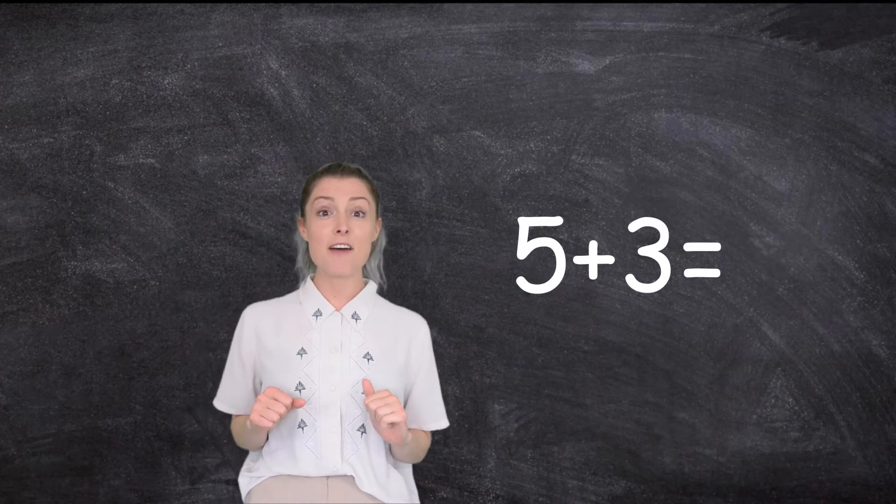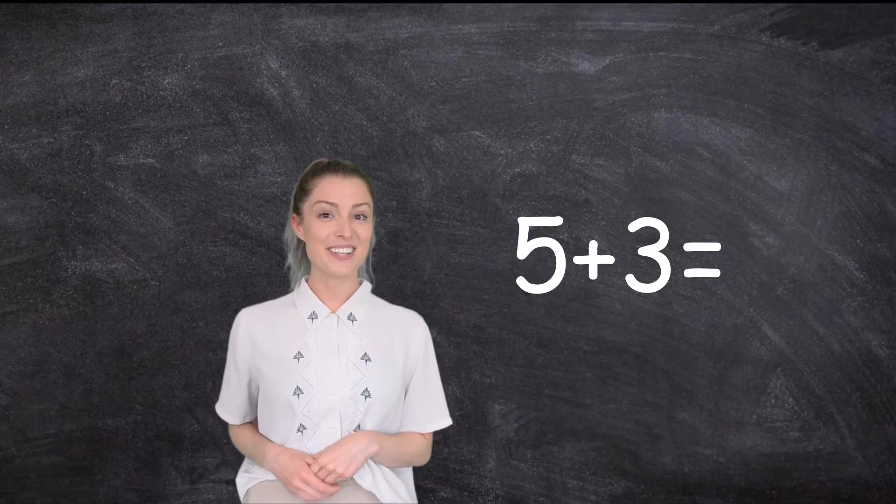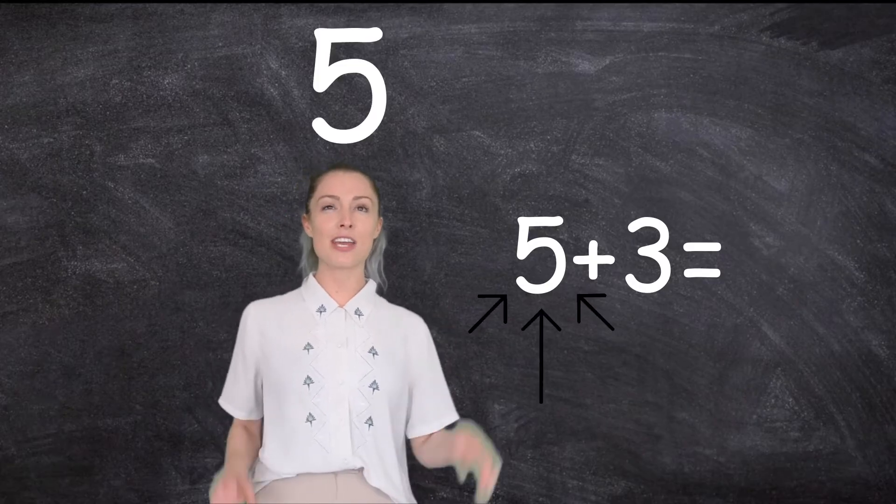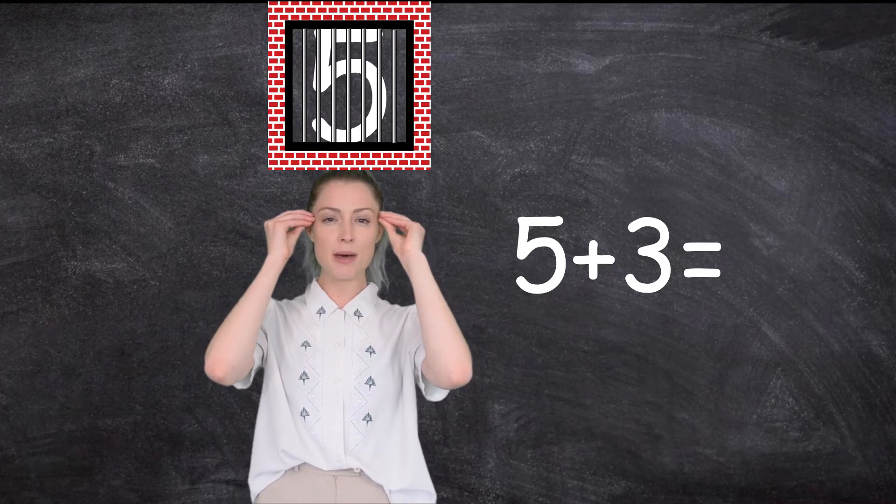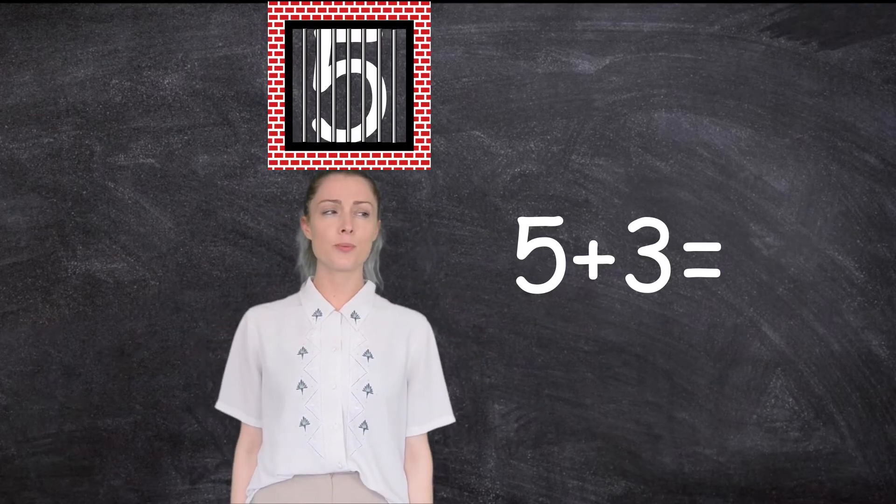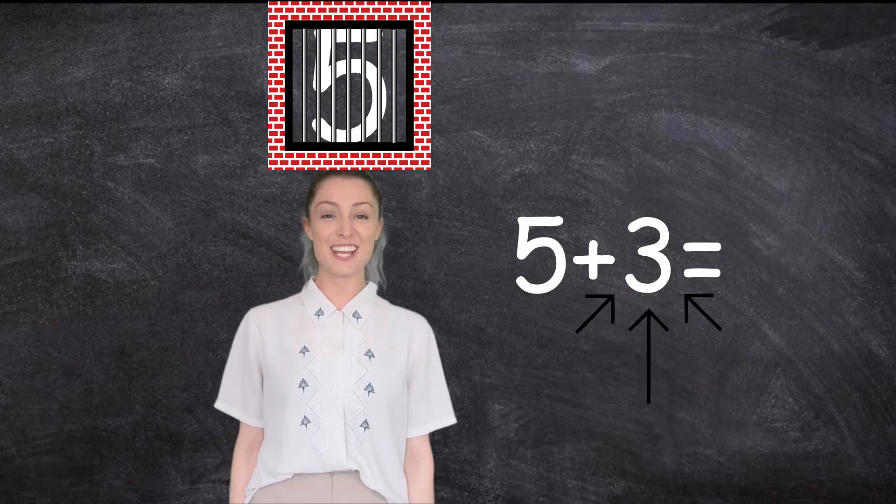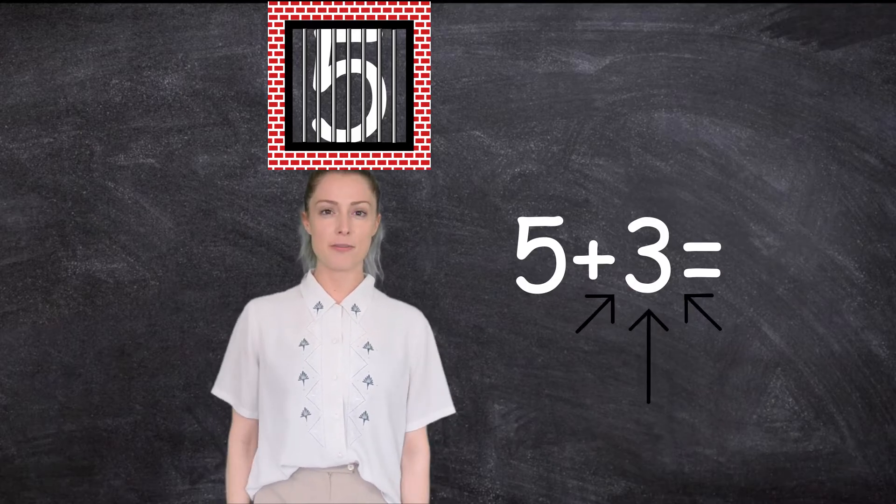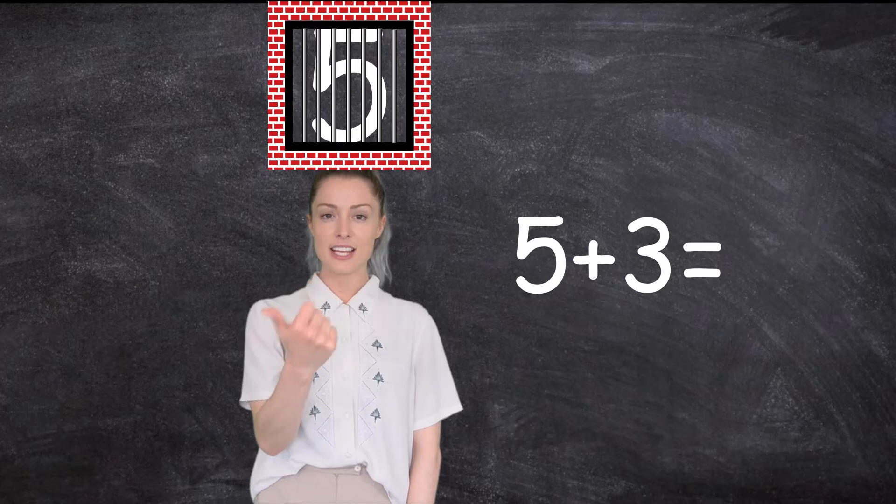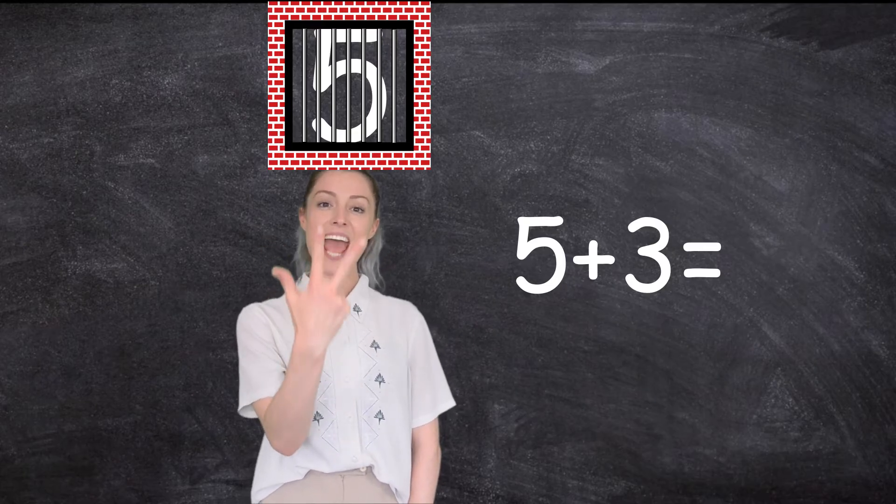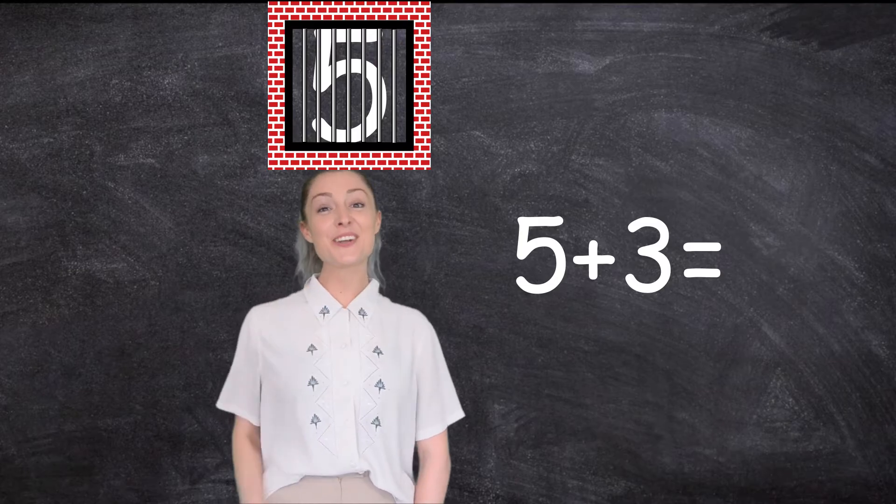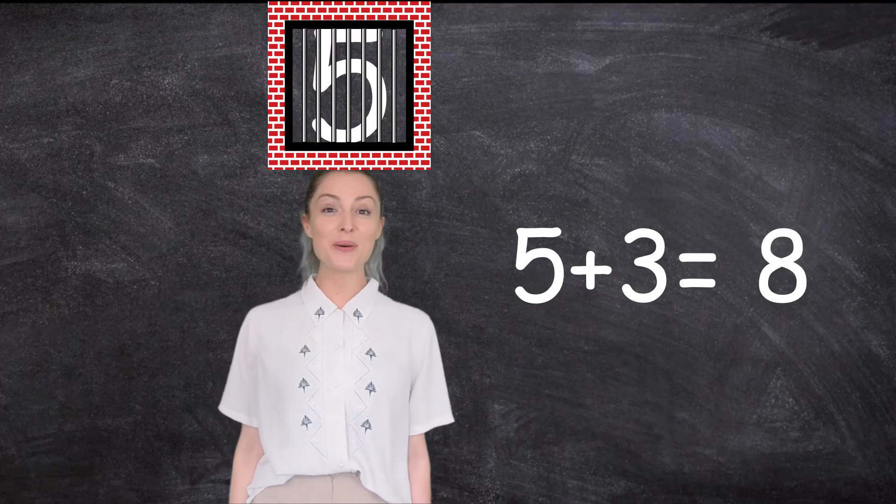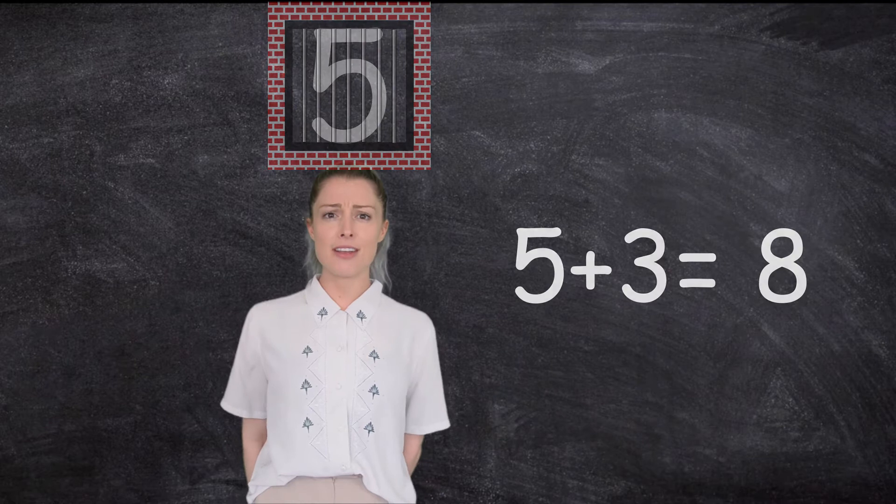Okay, five plus three. So which one's the larger number? Five. Let's lock it in our brain. Five. So five is the largest number. Now we need to count on three. Okay, five, six, seven, eight. Five plus three equals eight. Well done. Let's have another go.